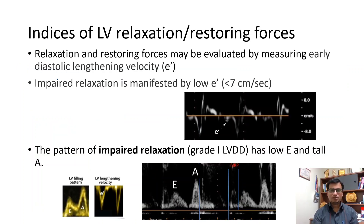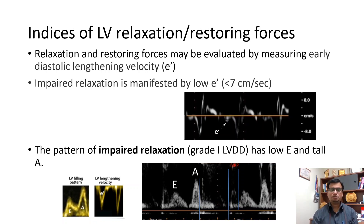LV relaxation and restoring forces may be evaluated by measuring E', that is early diastolic lengthening velocity. Impaired relaxation is manifested by low E', meaning less than 7 cm per second on tissue Doppler.